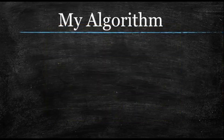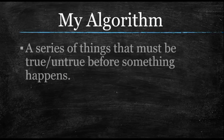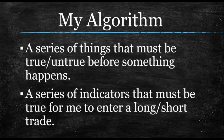Let's quickly go over what an algorithm is, because I want all of you to have one for yourself over time. It's not mathy — it has nothing to do with algebra. By definition, it's just a series of things that must be true or untrue before something happens. In a trading sense, it's a series of indicators that must all agree with each other. Every single one must say it is time to go long or short. If even one is indecisive or tells me to go the other way, I do nothing — I move on. I don't have to trade all the time.